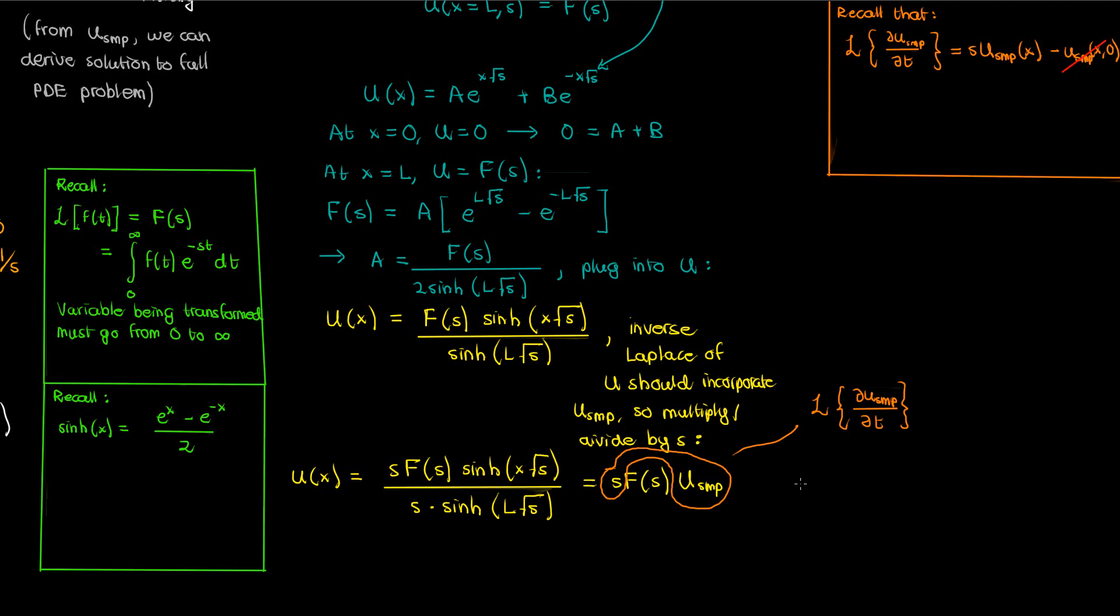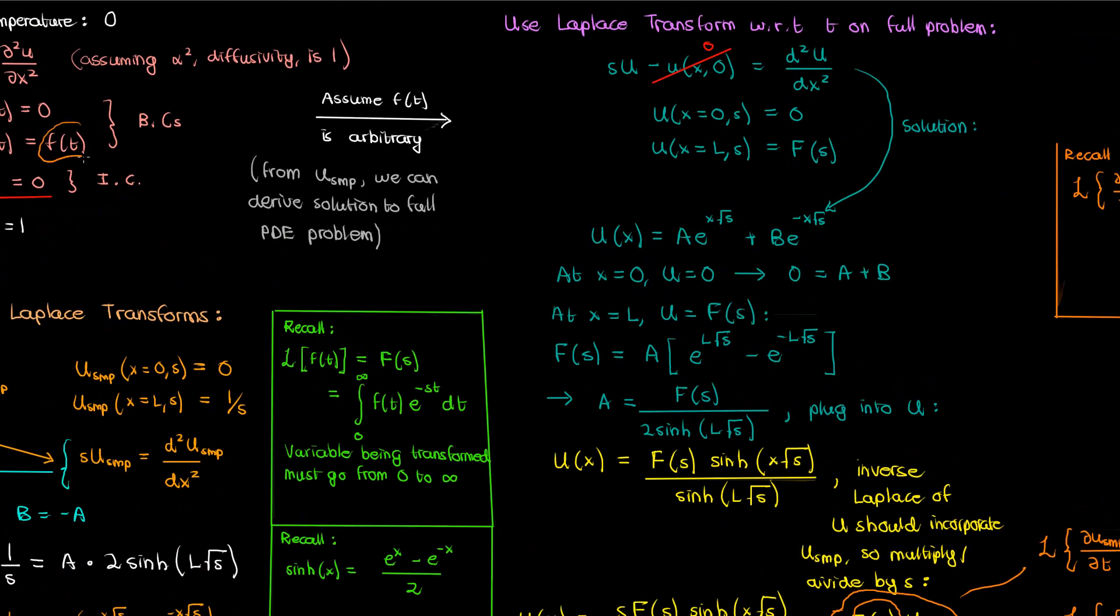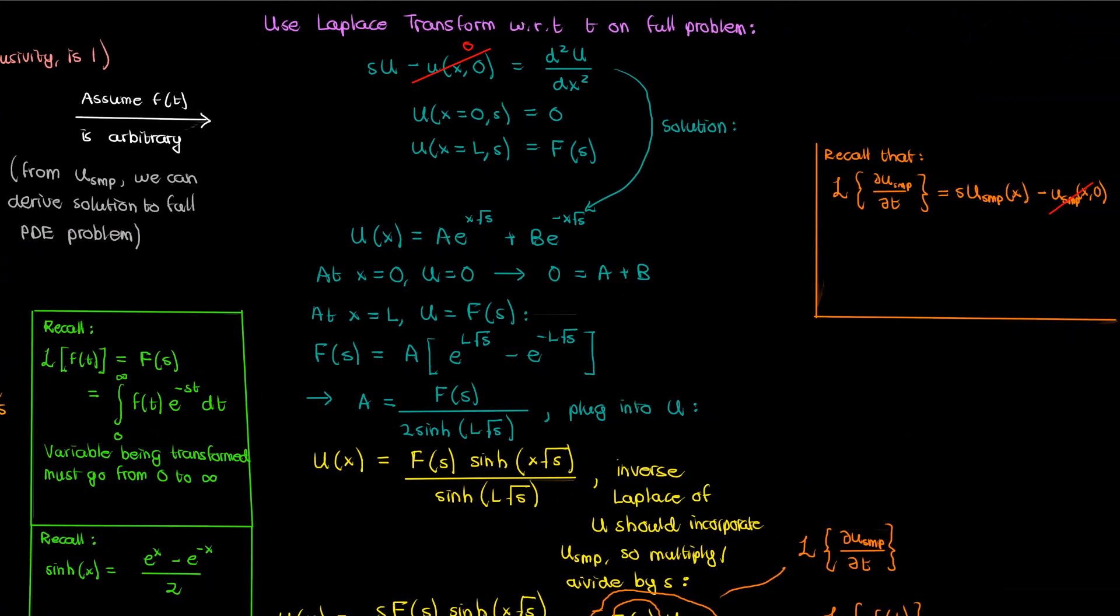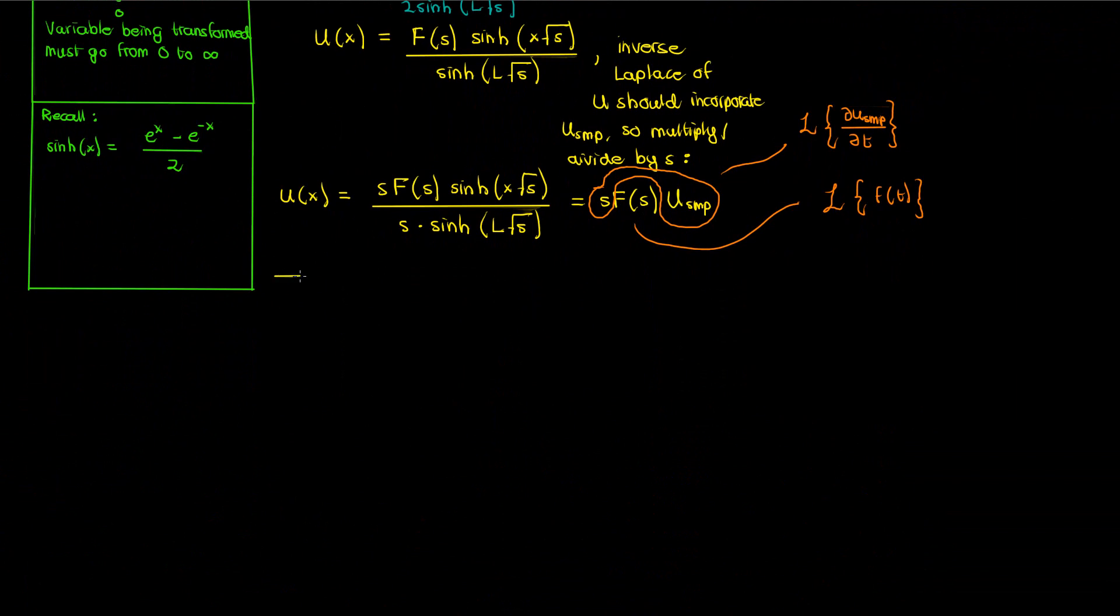However capital F of S can also be written as the Laplace transform of F of T, which if you recall is our time varying boundary condition that made our problem more complicated. So capital U of x is essentially the product of two Laplace transforms, the Laplace of F of T and the Laplace of the partial derivative of U sub SMP with respect to time, and this is where we can finally take our inverse Laplace transform.